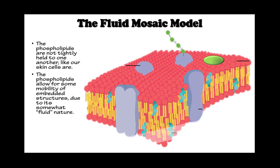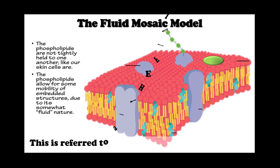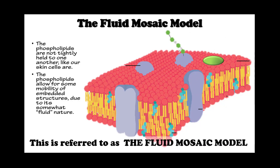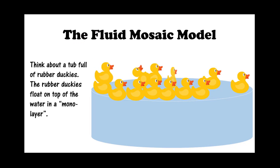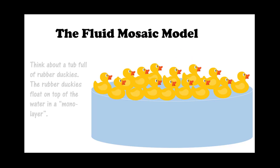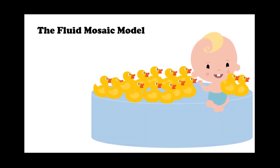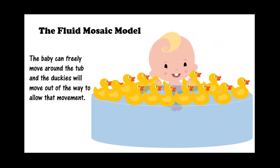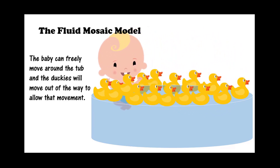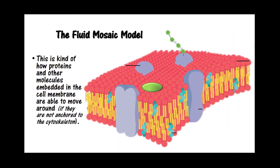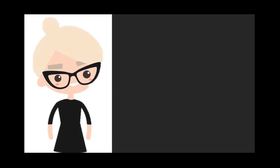The phospholipids are not tightly held to one another like our skin cells are. They allow for some mobility of the embedded structures due to their somewhat fluid nature. This is referred to as the fluid mosaic model of the cell membrane. Think about a tub full of rubber duckies floating in a monolayer. If you put a baby in the tub, the duckies gently float out of the way — this is how proteins and other molecules embedded in the cell membrane are able to move around.